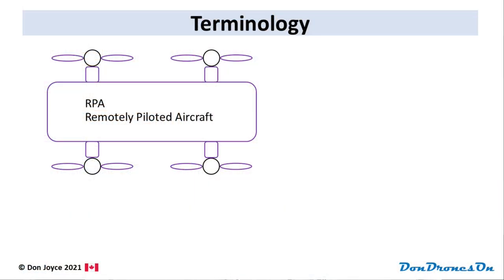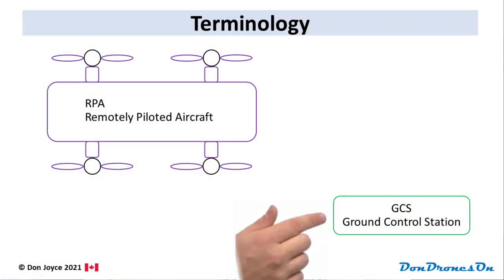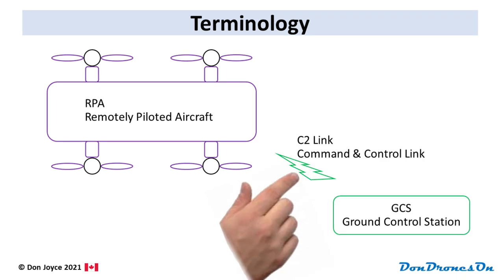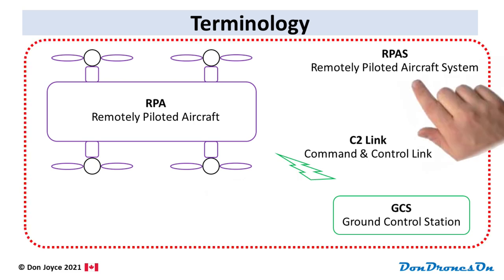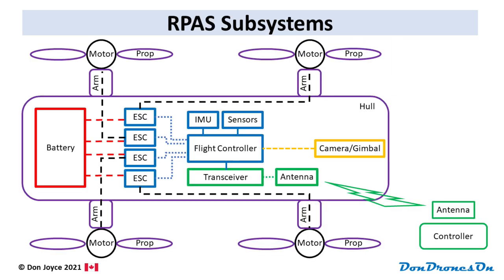A quick review of terminology. In Canada, your drone is officially called an RPA or Remotely Piloted Aircraft. Sometimes you'll see a lowercase S in front of that to mean a small RPA. Your controller is called the GCS or Ground Control Station, which communicates with the RPA via a Command and Control or C2 radio link. The whole thing combined is called an RPAS or Remotely Piloted Aircraft System. Now we'll walk through all the key subsystems that make this work.